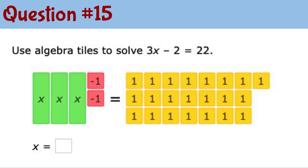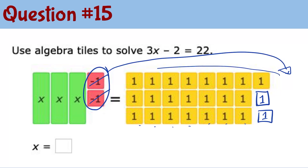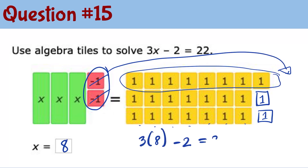For question number 15, we have negative 1 tiles on the left but no negative 1 tiles on the right side. We cannot cancel negative and positive because they are different quantities. What we can do is move those negative 1 tiles to the right, and they turn positive. Now we have 3 x tiles on the left and 24 on the right, so each x tile gets an equal share of 8 unit tiles — x equals 8. To check: substitute 8 for x, giving 3 times 8 minus 2 equals 22, which is 24 minus 2, and yes, that equals 22.